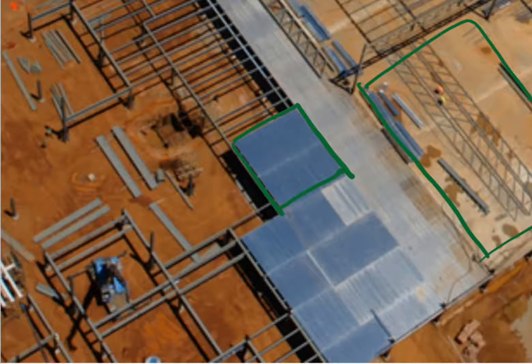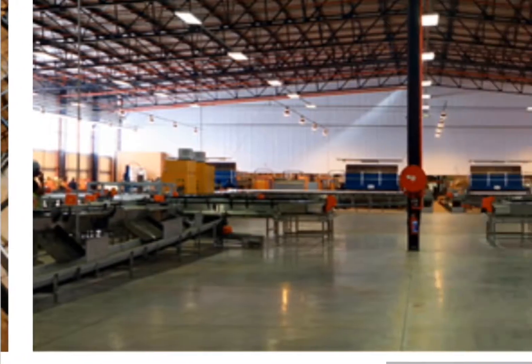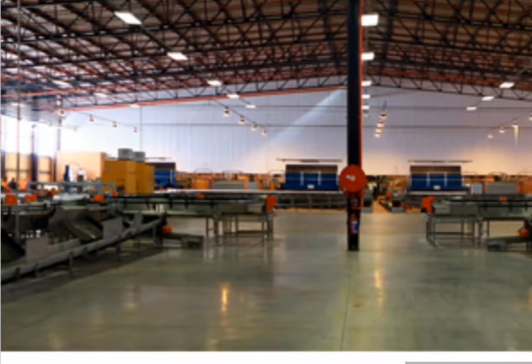Once it's in place, someone welds shear studs onto the beams all the way through. Then you come back and cast concrete into the deck and you'll have your floor at the end. Here is the final building once it's constructed.